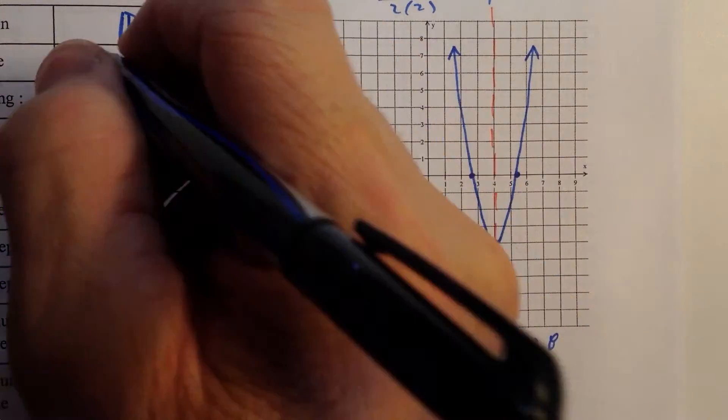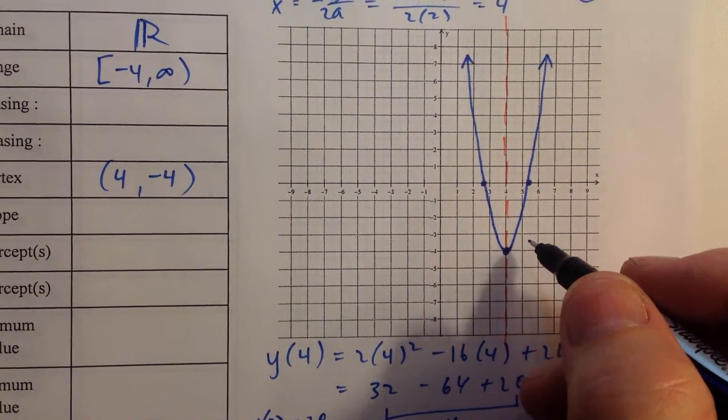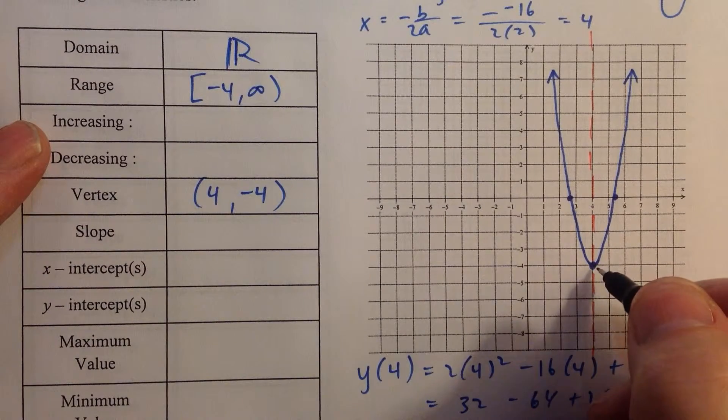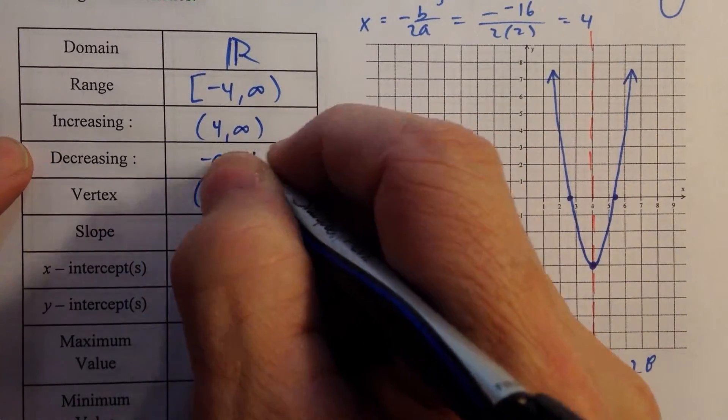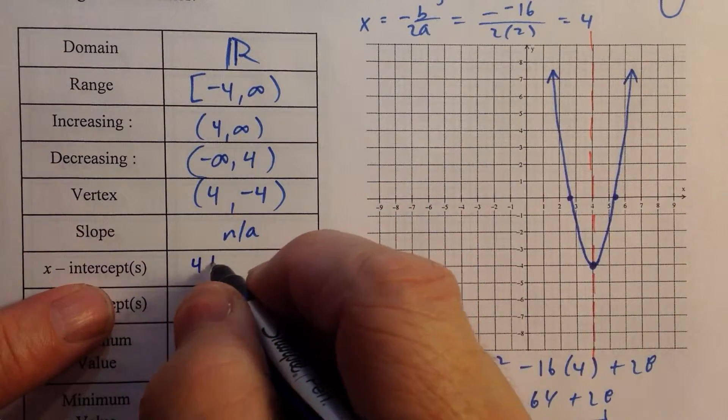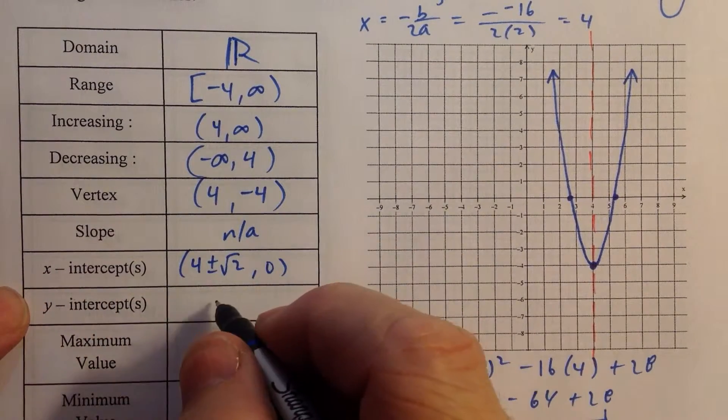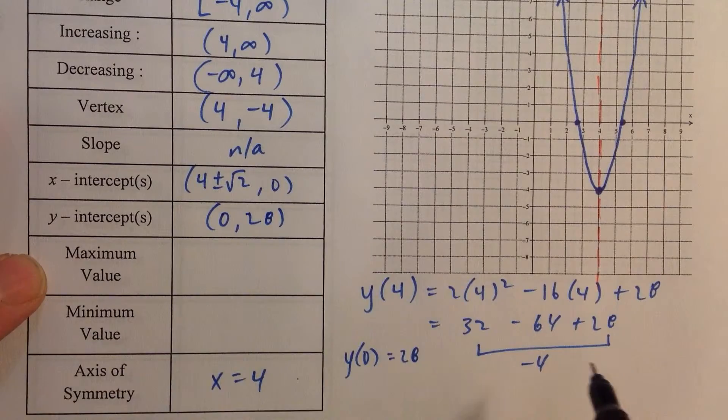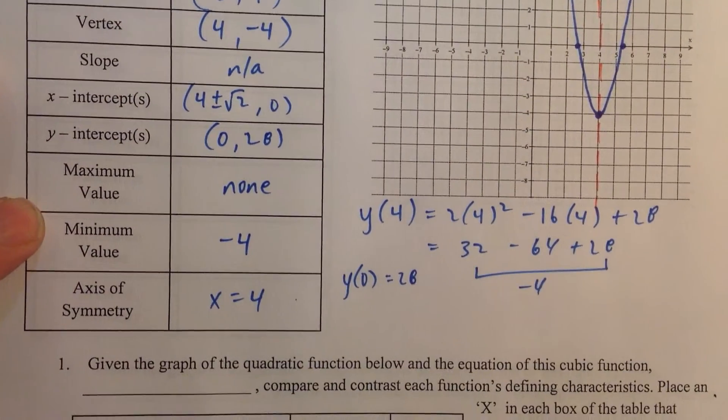And let's see. Our range then would be from negative 4 to infinity, including negative 4. The function here is increasing from the axis of symmetry, so from 4 to infinity, decreasing from negative infinity to 4. The slope is n/a. x-intercepts, we can write it like this: 4 plus or minus the square root of 2, comma 0. And we already talked about the y-intercept being 0, 28. Maximum value, so we have no maximum value, but we do have a minimum value of negative 4. And that is it.